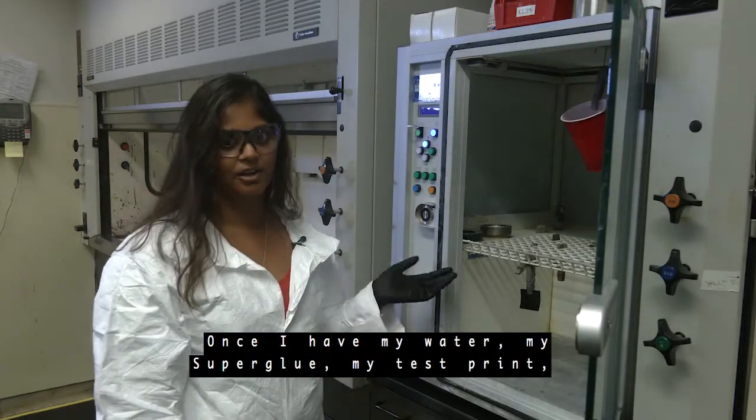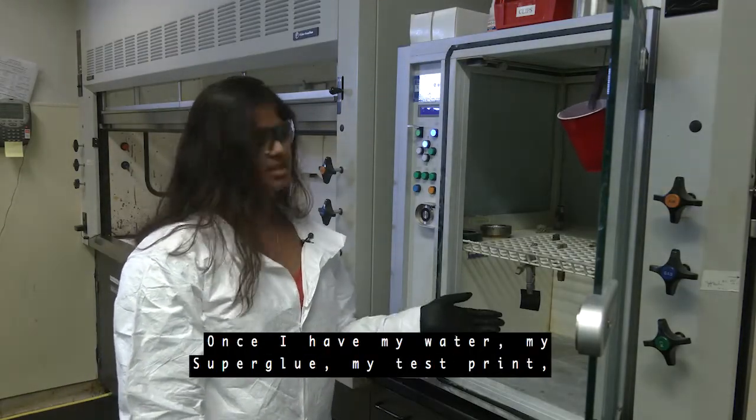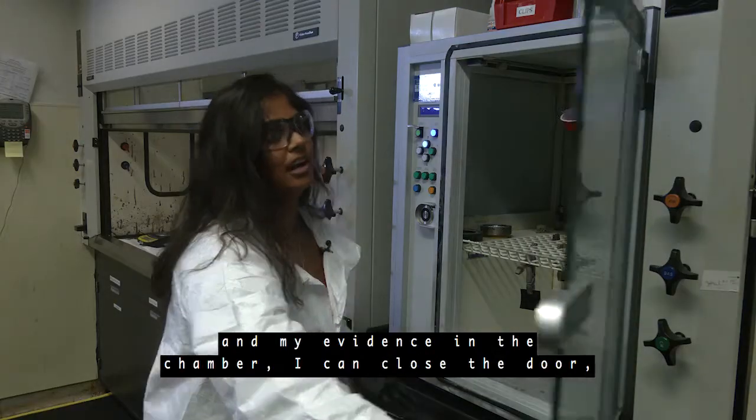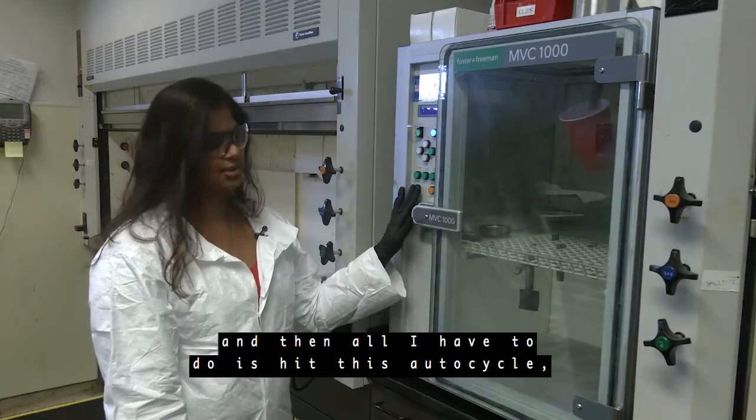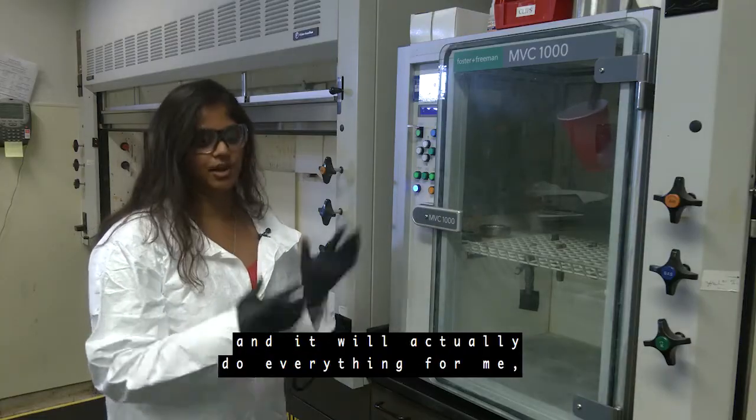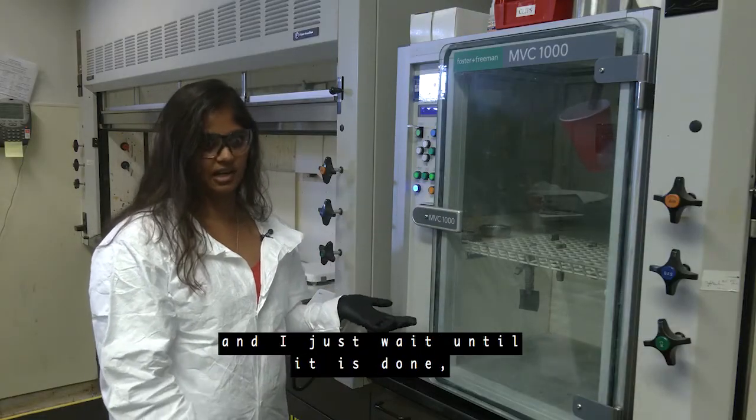Once I have my water, my superglue, my test print, and my evidence in the chamber I can close the door. And then all I have to do is hit this auto cycle and it will actually do everything for me and I just wait until it's done.